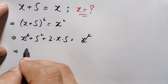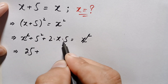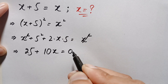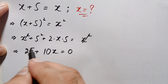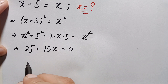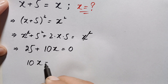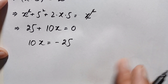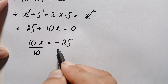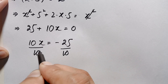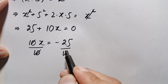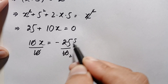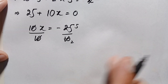After cancellation, we have 25 plus 10x equals 0. Moving the constant to the right-hand side gives 10x equals negative 25. Dividing both sides by 10, and since 25 and 10 are both divisible by 5, we get x equals negative 5 over 2.